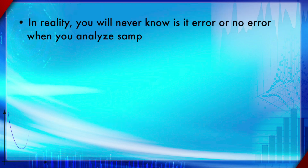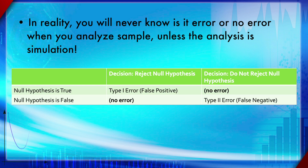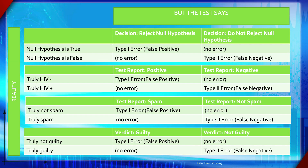In reality, you will never know whether it is actually an error or no error, whether it is false positive, false negative, or correct — unless you do simulation studies. This two-way table summarizes everything: the columns represent what the test says or the decision of the statistical test, while the rows represent whether the null hypothesis is true or false — that is, reality. The second table covers truly HIV negative and positive cases with Type 1 and Type 2 errors, and another covers spam filter and court verdict scenarios.